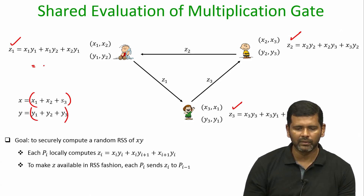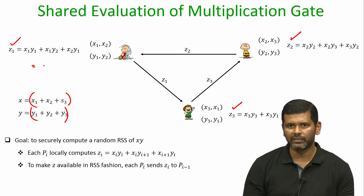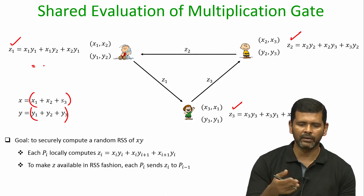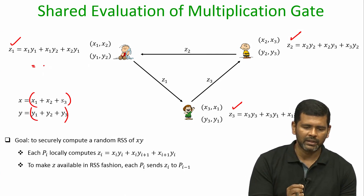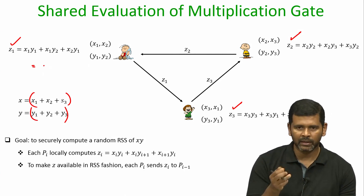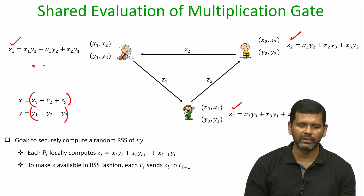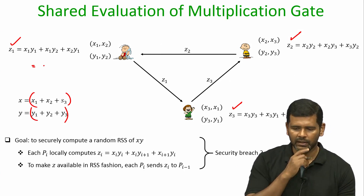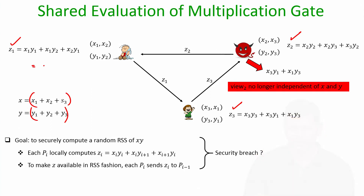We know that Z1 + Z2 + Z3 = X times Y, so we thought: why not let the parties communicate the missing piece to ensure that X times Y is secret shared in a replicated secret shared fashion? But in the last lecture we saw that this leaks information about the inputs of the multiplication gate. For instance, if P2 is corrupt, its view is no longer independent of X and Y because it is learning information about Y1 and X1.